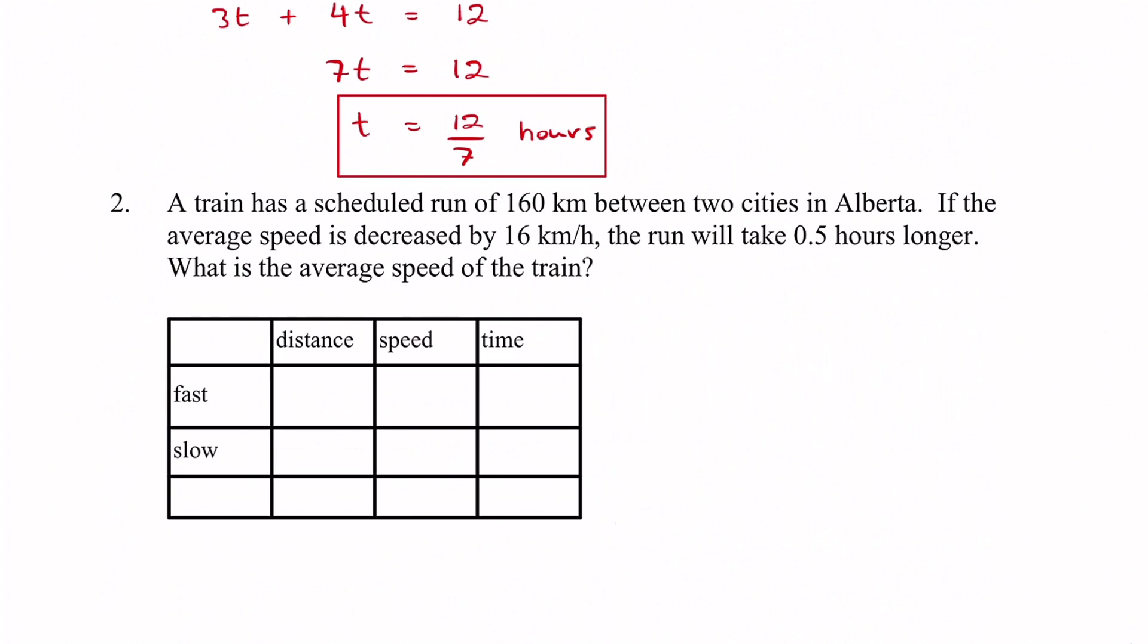In this case we're going to have a fast run, the one where we went initially, and then we decreased our speed so then we're going to have a slower run. We're going to have two different sets of information for each of these. The distance for both of them is going to be 160 kilometers. That's not going to change. So 160 for both of these.